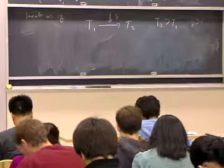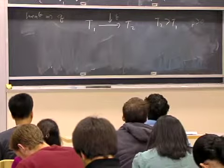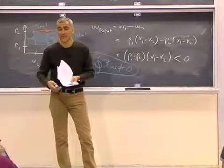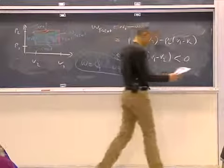If the temperature of the system goes down, heat flows out of the system, and we call that negative Q. Same convention is for W, basically.